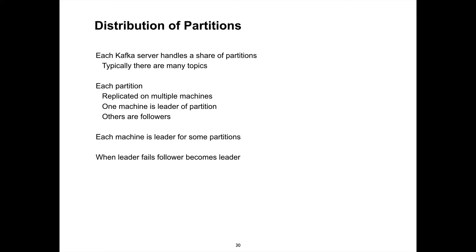When we have partitions, one of the partitions becomes a leader — they're in control. You've got three machines and all your topics are replicated across all three — each machine will be a leader on different topics. When a leader fails, one of the other machines becomes the leader to take over. If you're a follower, you're recording all the events but not processing clients on that particular topic.